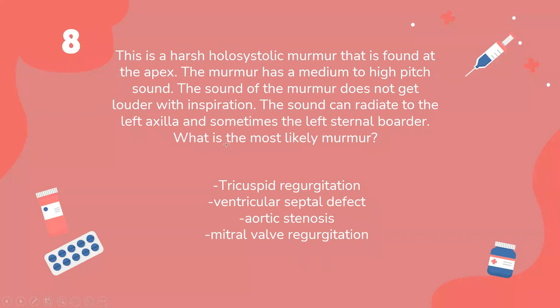We have a harsh holosystolic murmur. Once we hear a holosystolic murmur, it means it's either the mitral valve or the tricuspid valve. We then read the scenario and find the murmur radiates to the left axilla. What is closer to the left axilla — the mitral valve or the tricuspid valve? Exactly — the mitral valve. It's also heard at the apex. So if we see the words apex, left axilla, and left sternal border together, this tells us it's the mitral valve, because the mitral valve radiates to the apex, left axilla, and left sternal border.